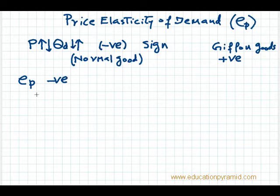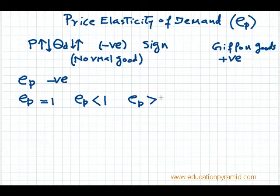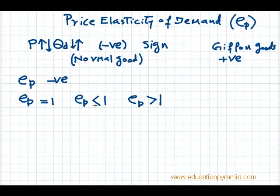As far as the degree of price elasticity of demand is concerned, it may be equal to 1, less than 1, or greater than 1. It depends on the sensitivity or response of quantity demanded due to a change in price. If the response in quantity demanded is equal to the change in price, then elasticity is equal to 1; otherwise it is less than 1 or greater than 1.